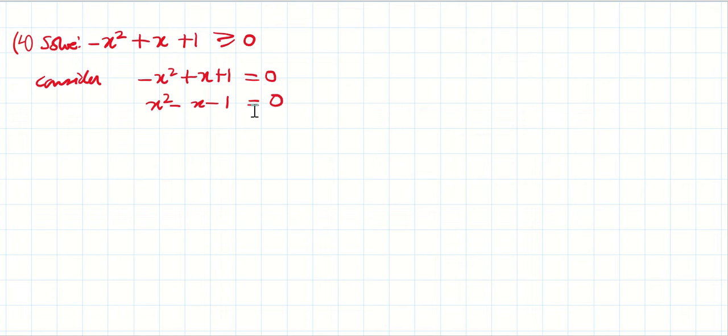Now if you try to factorize this, you'll find it's very difficult to factorize. You won't be able to factorize it. So what you need to do is solve this using the quadratic formula. So a = 1, b = -1, c = -1.